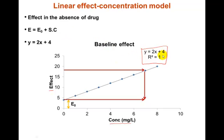In this equation Y = 2X + 4, there is an additional plus 4 compared to the simpler Y = 2X. This means there is already some kind of effect at zero concentration of the drug. So the general form is E is equal to E₀ plus S times C.